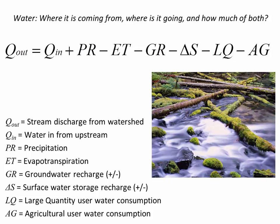The first method we started with is the rational method — the simple formula Q = CIA. This is a crude, approximate way of accounting for all those water balance components. I is the rate of precipitation. During a rainstorm, ET is neglected. The C value is the ratio of runoff to precipitation, so 1 minus C tells you how much water gets into the soil — an indirect way of accounting for groundwater recharge GR.